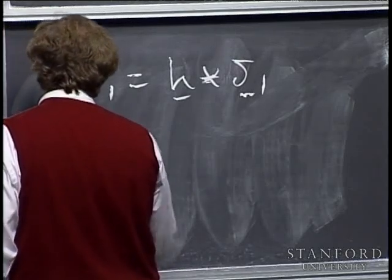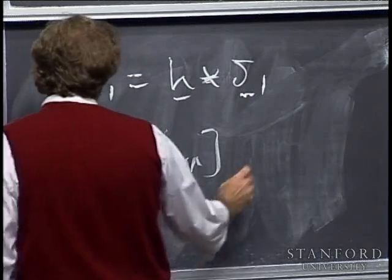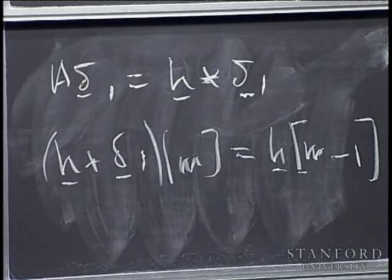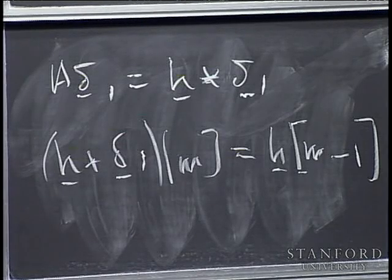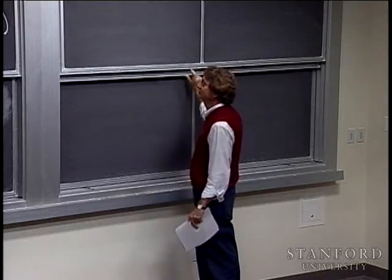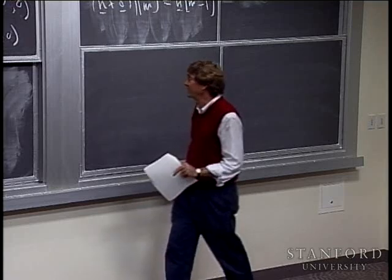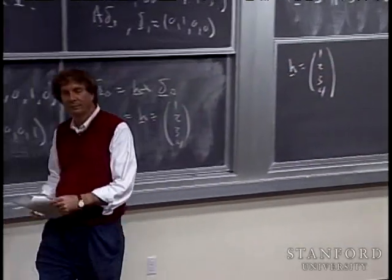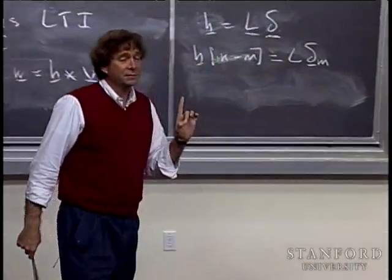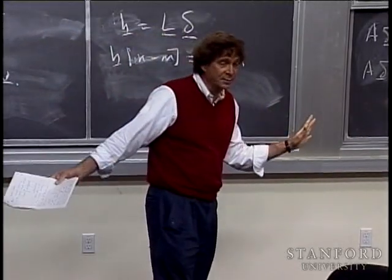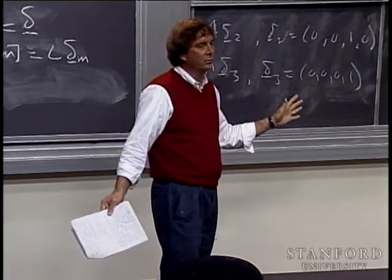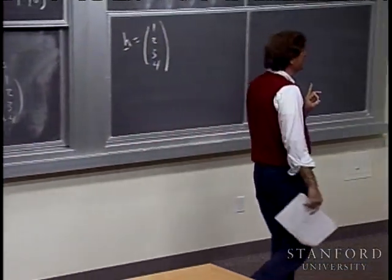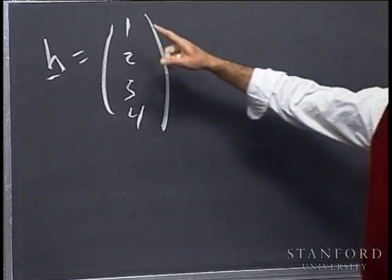Circulant matrices and Toeplitz matrices are standard matrices that come up a lot in various applications. Circulant matrices are like Toeplitz matrices except they have the additional property that the columns are periodic — each one is obtained from the previous one by a shift. Bob Gray in our department has a whole book on Toeplitz matrices and their applications. We'll come back to this matrix a little bit later. You should be able to take results from the continuous case and bring them over to the discrete case.